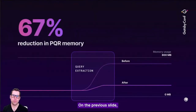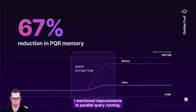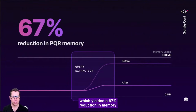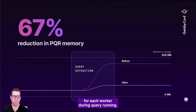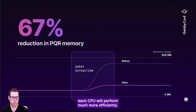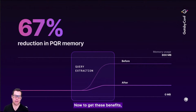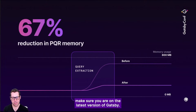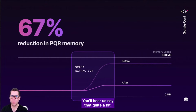On the previous slide, I mentioned improvements to parallel query running. Here you can see the latest improvements, which yielded a 67% reduction in memory for each worker during query running. So if you're on a multi-core machine, each CPU will perform much more efficiently. To get these benefits, make sure you are on the latest version of Gatsby.